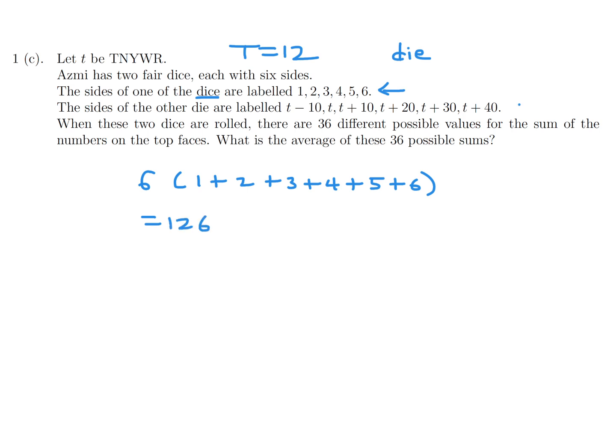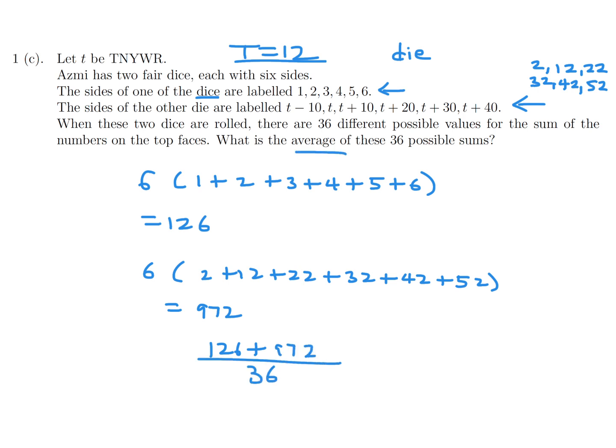And the same story holds true for this guy, but remember, t is 12. So that's going to make these numbers 2, 12, 22, 32, 42, and 52, right? So same story, when you add up those guys, it's going to be 2 plus 12 plus 22 plus 32 plus 42 plus 52. And that number is 972. So the total would be the 126 plus the 972. And they want the average, so you divide it by 36, since there's 36 sums. And that is 30.5.